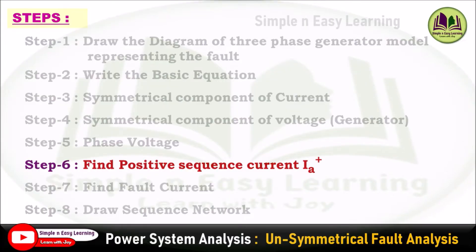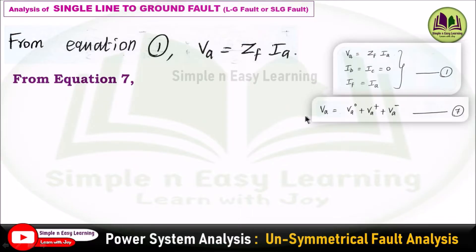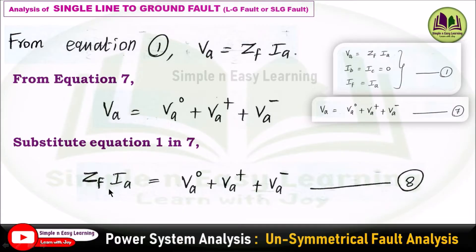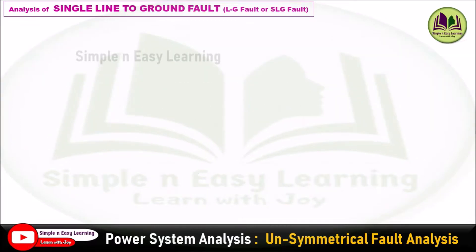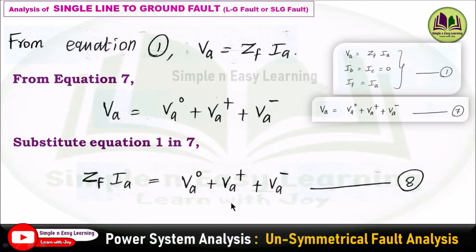Step 6 — find the positive sequence current ia+. From equation 1, va = zf × ia. From equation 7, va = va0 + va+ + va−. Equating these two expressions: zf × ia = va0 + va+ + va−. This is equation 8. We now substitute the values from equation 5 into equation 8.